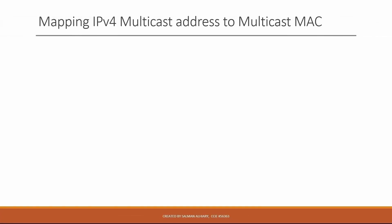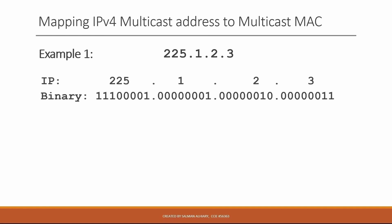Let's see how we can map multicast addresses — specifically, mapping an IPv4 multicast address to a multicast MAC address. For example, take 225.1.2.3. We need to find the MAC address for this multicast destination group. There are several steps to follow. Step one: convert the IP address to binary.